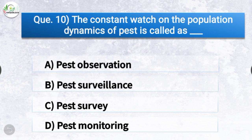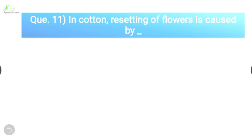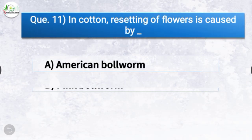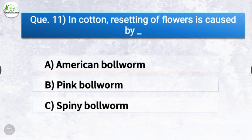Question number ten: The constant watch on the population dynamics of pest is called as dash. The options are pest observation, pest surveillance, pest survey, or pest monitoring. The correct answer is option B, pest surveillance — the constant watch on the population dynamics of pest is called pest surveillance.